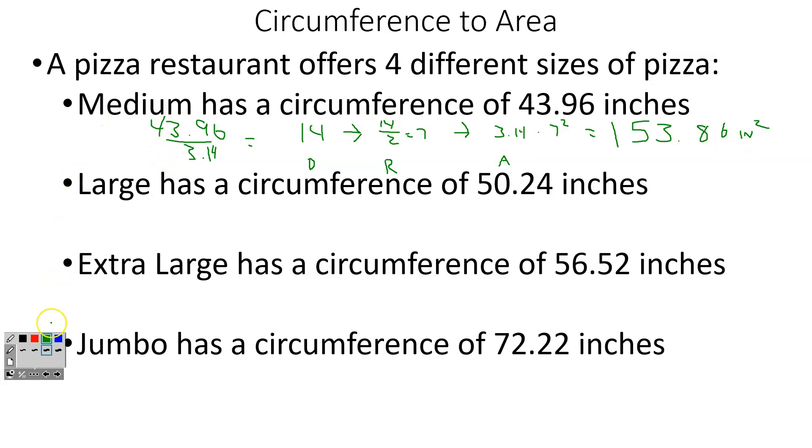And I get an answer of 153.86 squared inches. So again, the pattern goes circumference divided by pi, and I get to your diameter. And then to get a radius, you have to do diameter divided by 2, which is 7. And to go from radius to area, now you plug in the radius into your formula pi r squared. So I'm not going to do the rest of these for right now, but you kind of get the idea of what to do.